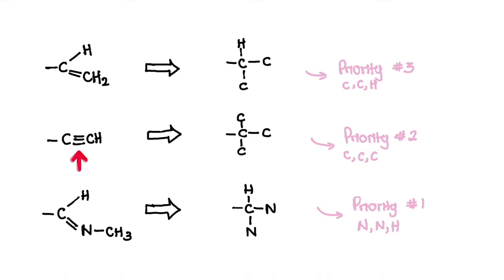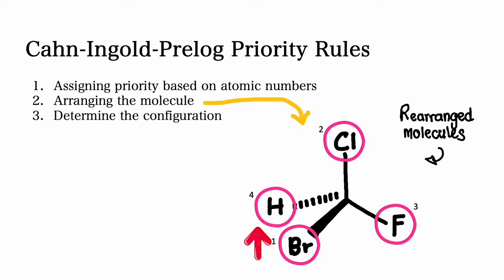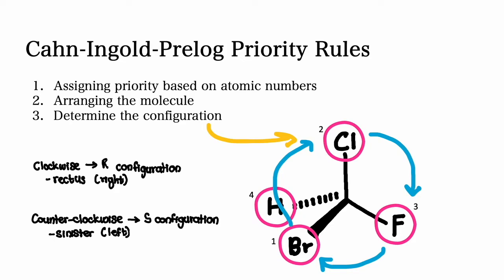The second rule is that you need to arrange the molecule. After assigning priorities, the next step is to arrange the molecule so that the lowest priority substituent — which is usually hydrogen — is pointing away from you. This is only done if the lowest priority group is not initially oriented in this way, so you may have to mentally rotate the molecule.